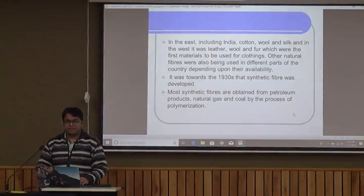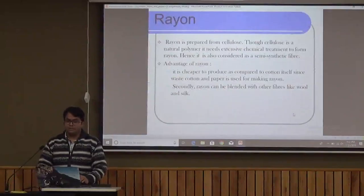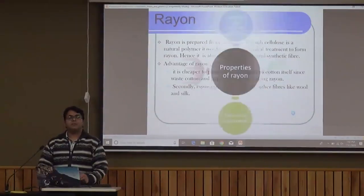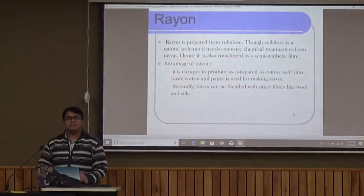It was around 1930 that synthetic fibers were first made. They are mainly obtained from petroleum products, natural gas, and coal. Rayon is a very common and important fiber. It is obtained from cellulose, which is obtained from wood itself. Though cellulose is a natural polymer, it needs extensive chemical treatment to form rayon. As a result, we do not call it a completely chemical polymer — it is basically a semi-synthetic polymer, obtained from nature but requiring extensive synthetic treatment.